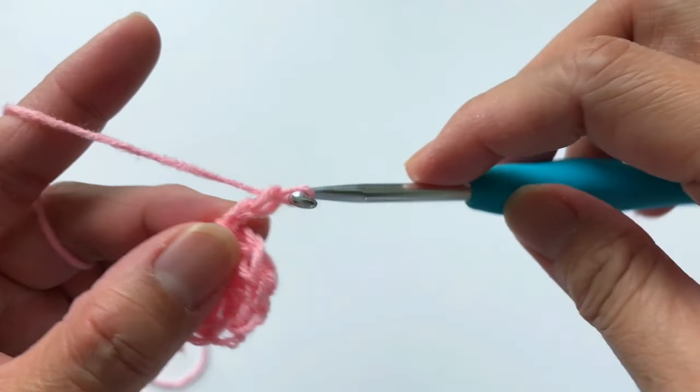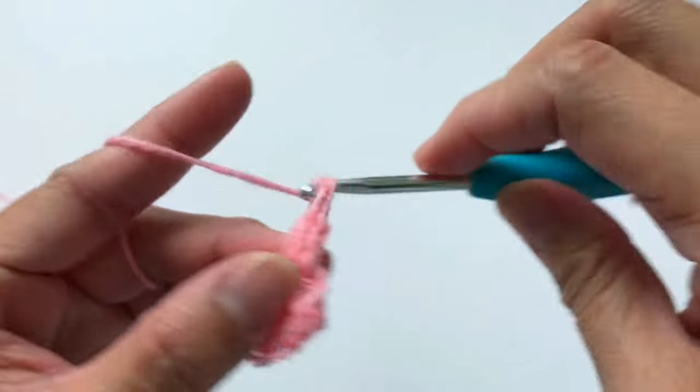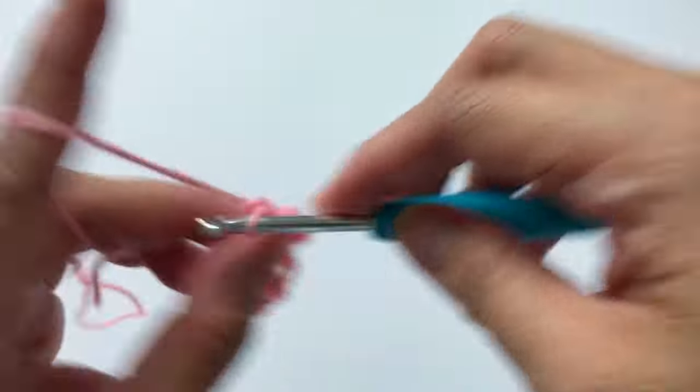And now, chain 2, and then we're going to repeat the same thing. So 5 double crochet, and chain 2.